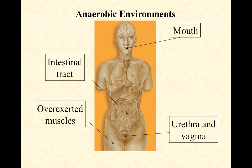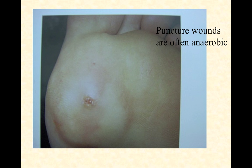Overexerted muscles will ferment — when we go into anaerobic training, for example, we're demanding that our muscles ferment for a very short period. The female vaginal tract and urethra also tend to be very anoxic habitats, so anaerobic microorganisms are going to dominate the microbial chemistry of these places.